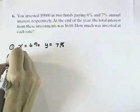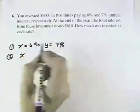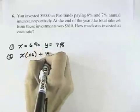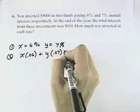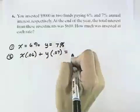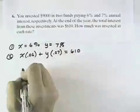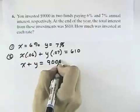Step two is to write our system of equations. We know X is the amount that is invested at 6%, so 0.06 times X, plus Y, the amount invested at 7%, so 0.07 of Y, should equal the total amount of interest, which was $610. We also know that the total of the two investments should equal $9,000.